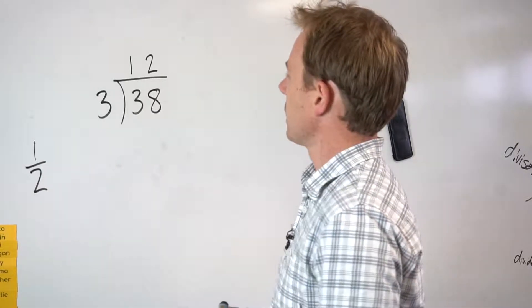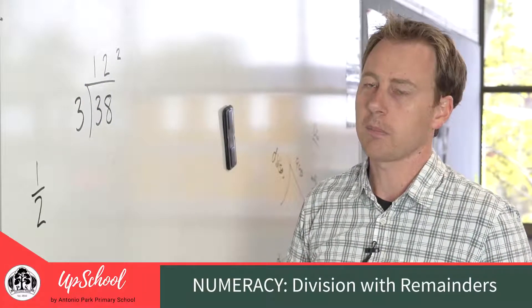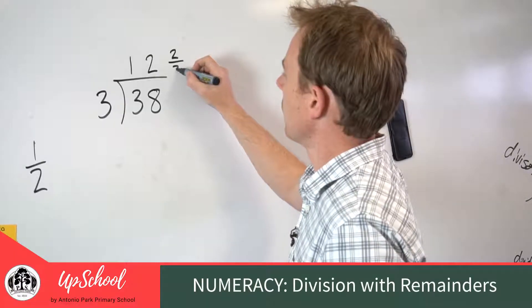So here, the number that we had as the remainder would be the numerator, and the number that we initially divided by would be the denominator.